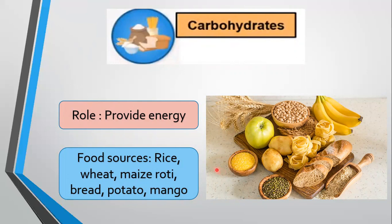Cereals like wheat, rice and maize, and vegetables like potato and tapioca are rich sources of carbohydrates.